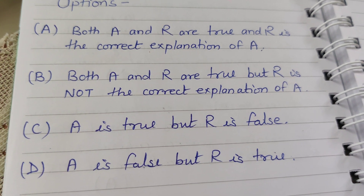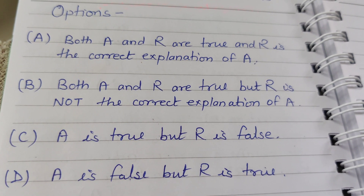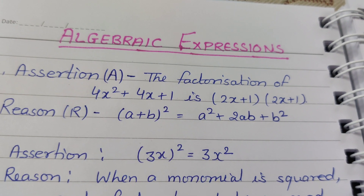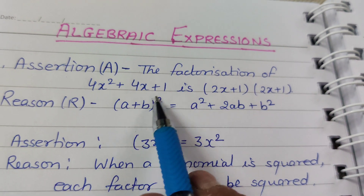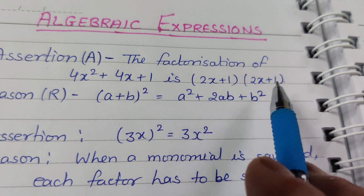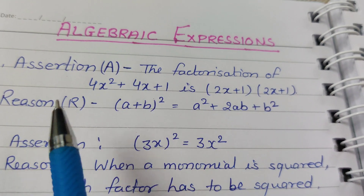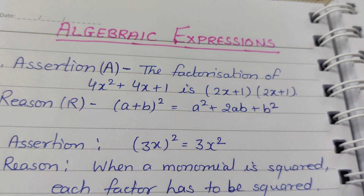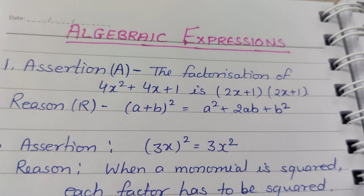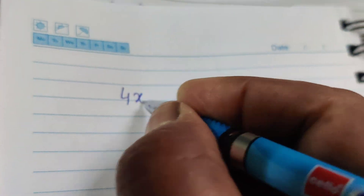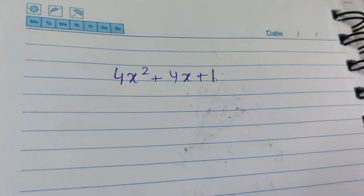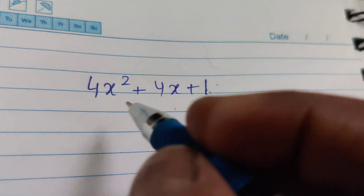Question 1 — Assertion: The factorization of 4x² + 4x + 1 is (2x+1)(2x+1). Reason: (a+b)² = a² + 2ab + b². We need to solve the assertion by factorizing 4x² + 4x + 1 using this identity.